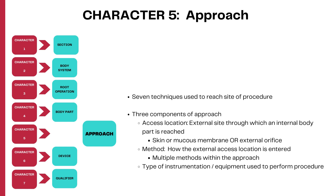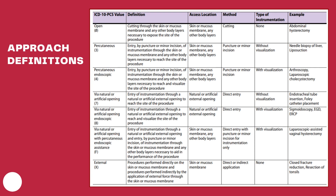Character five is approach — the way the procedure is performed, including the access location, the type of method used, and the type of instrumentation used. There are a total of seven approach values in the PCS coding system: open, percutaneous, percutaneous endoscopic, via natural or artificial opening, via natural or artificial opening endoscopic, via natural or artificial opening with percutaneous endoscopic assistance, and external. We will talk about each of these approach values individually along with examples in our next videos.